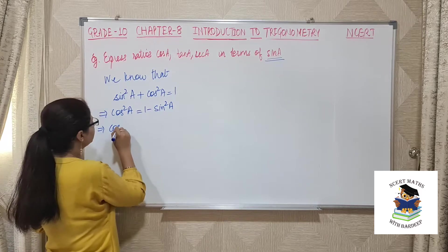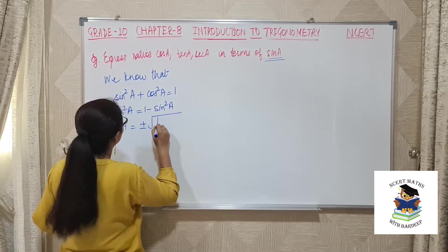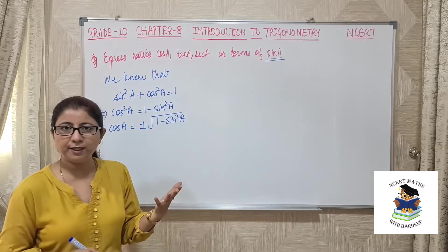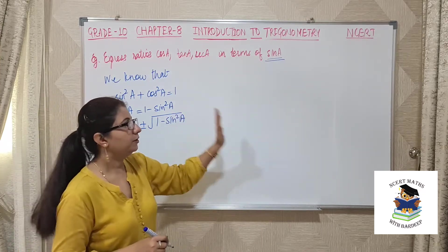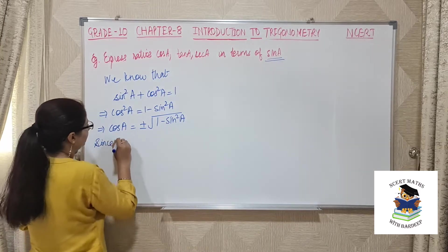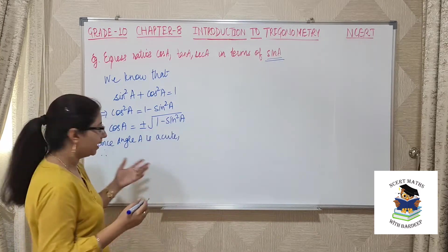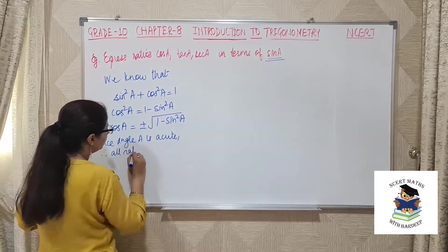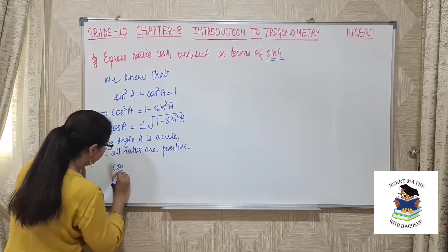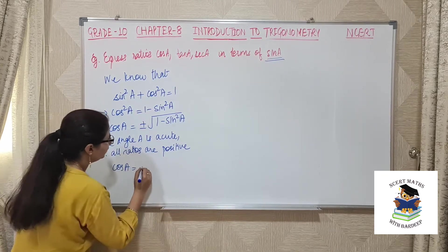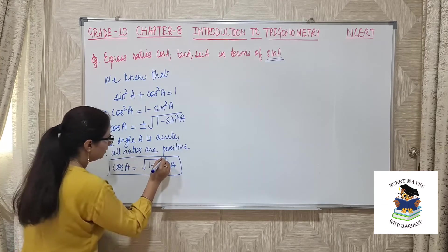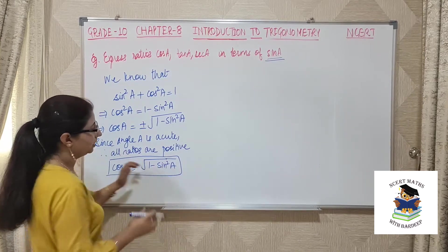So cos A = ±√(1 − sin²A). Since angle A is acute, all ratios are positive, so we take the positive value only. Therefore: cos A = √(1 − sin²A). We have now found cos A in terms of sin A.